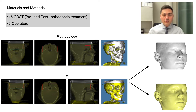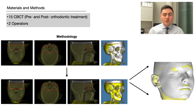To answer the question, we used 15 pairs of CBCTs taken on grown individuals. Two operators performed the voxel-based superimposition of pre- and post-treatment CBCTs on the anterior cranial base, as shown in the image on your screen. Then, facial soft tissue surfaces were extracted from the superimposed CBCT volumes as surface images, such as the ones on the right-hand side. The position of these images in space is determined by the position of the superimposed 3D volumes.